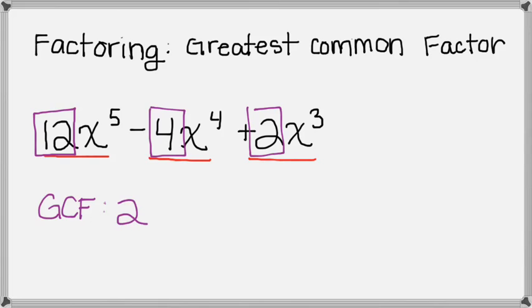And then we can go ahead and look at the variables. So between x to the 5th, x to the 4th, and x cubed, if we think about what will divide all of them. For example, x will divide all of them.